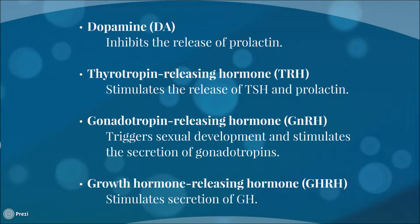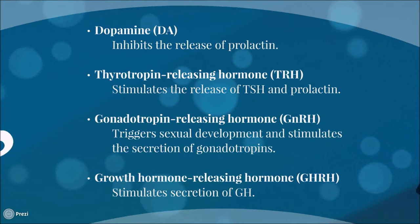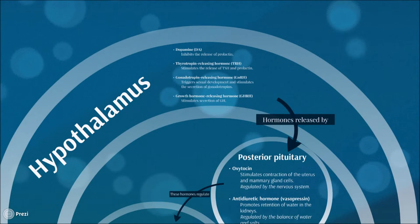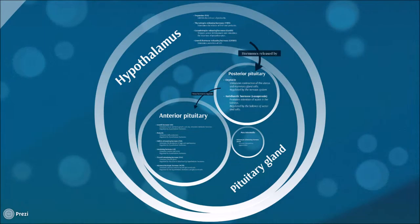We also have the growth hormone-releasing hormone, which stimulates cells in the anterior lobe of the pituitary to secrete growth hormone. As for the pituitary gland, it can be divided into two different parts: the posterior lobe, which releases the hormones made by the hypothalamus, and the anterior lobe.